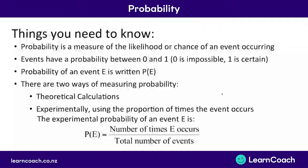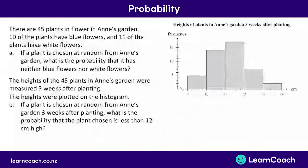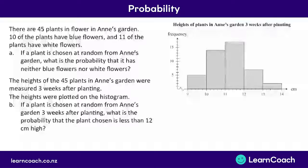Let's look at how we'd apply this information in a question. This question tells us that there are 45 plants in flower in Anne's garden. 10 of the plants have blue flowers and 11 of the plants have white flowers. The first part of the question says: if a plant is chosen at random from Anne's garden, what is the probability that it neither has blue flowers nor white flowers?